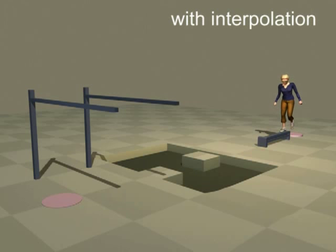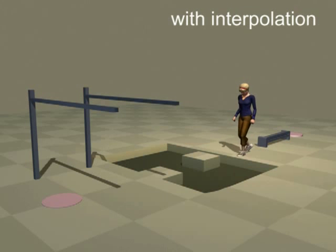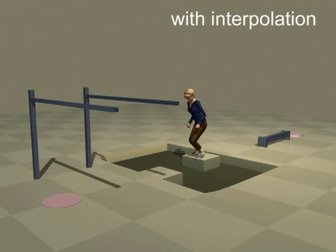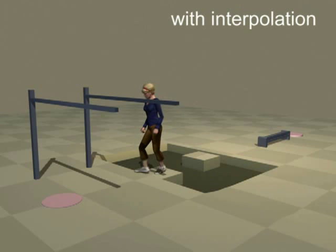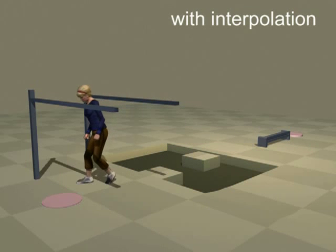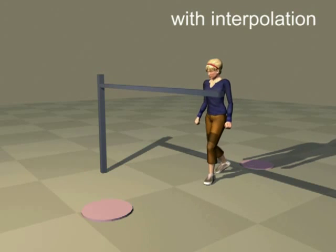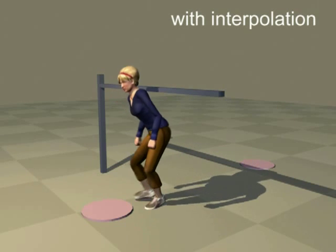Interpolated motion graphs can be used to create long motions with a variety of behaviors. They do not require motions to be pre-processed into segments with similar structure. Interpolated motion graphs can automatically select which motion segments to interpolate and when to transition from one behavior to another.